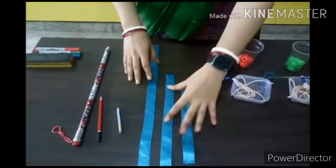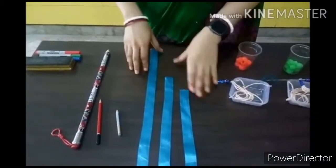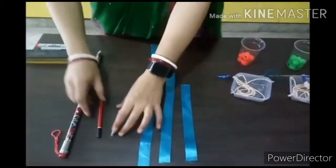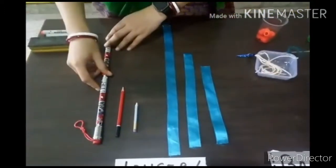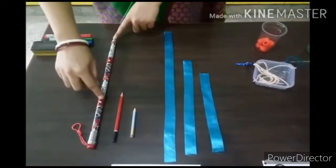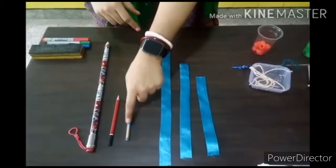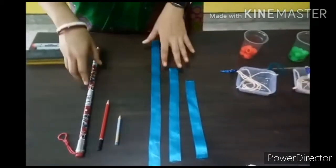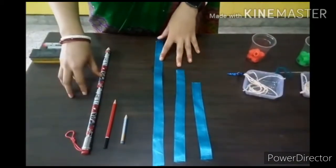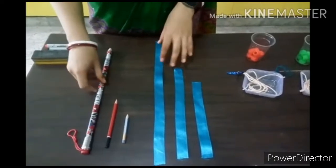In this way children, we will compare the length of any object. Similarly, these three pencils are kept here. This one is the longest and this one is the shortest pencil. So, children, try to practice it at home with the things around.